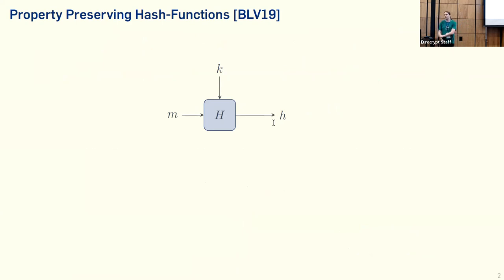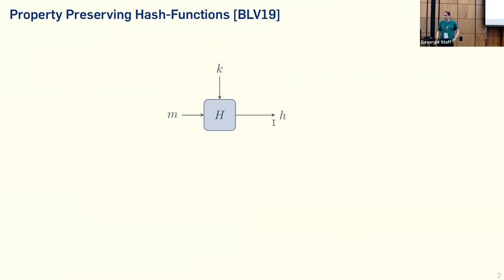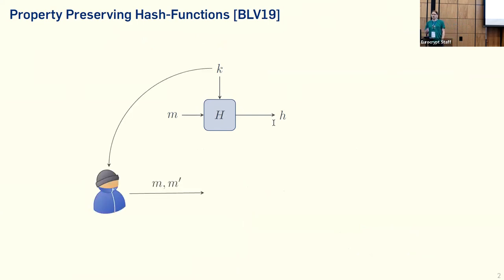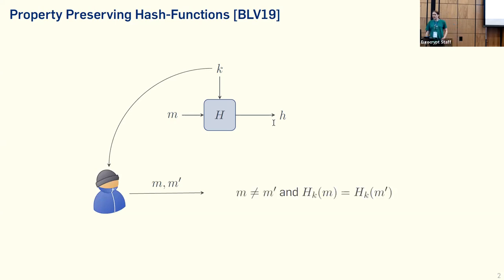The concept was first introduced by Boyle, Lavinia, and Vaikuntanathan in 2019. It's most easily understood as a generalization of collision-resistant hashing. If we have a hash function H, it takes as input a key and a message M — and yes, theoreticians think that hash functions get keys — and it outputs a hash value H. It's collision-resistant if for any polynomial time attacker, if they output two messages M and M prime, then the probability that those two messages will be different but the hash will be the same is negligible.